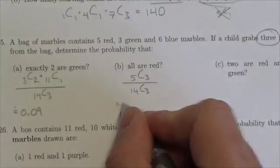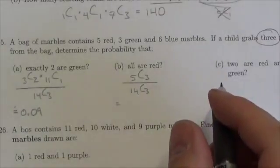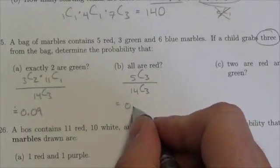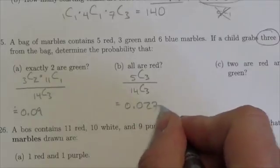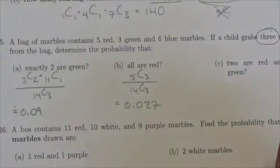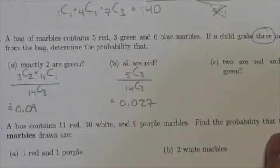So now we just got to divide by the total number of ways that could happen, and when we do that we're going to get 0.027. So there's roughly a 2.7 percent chance that that's going to happen.